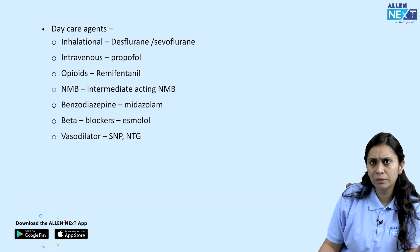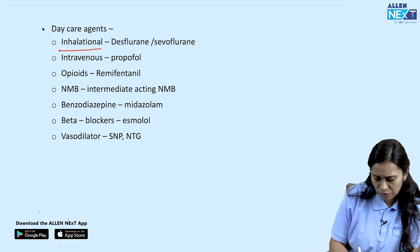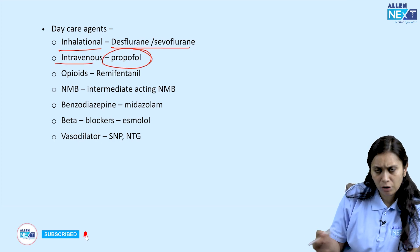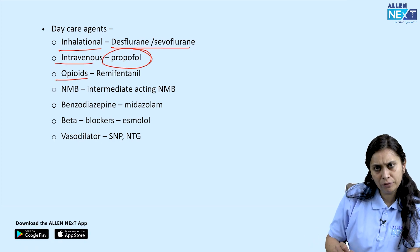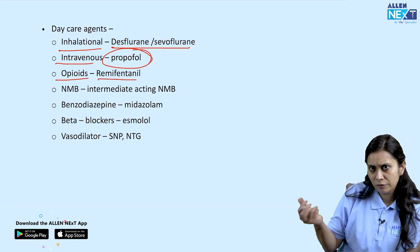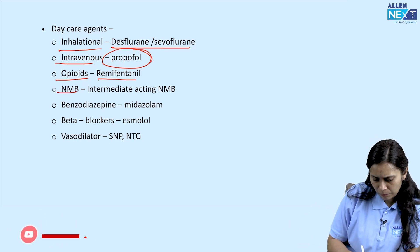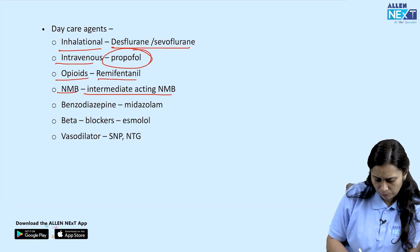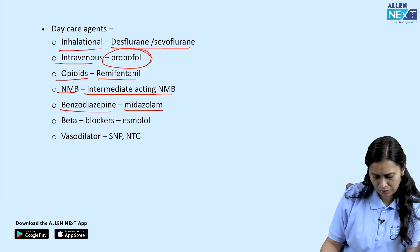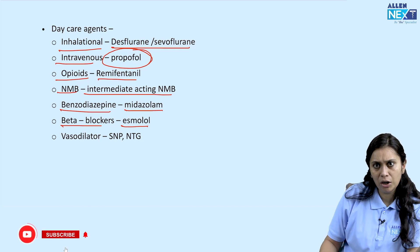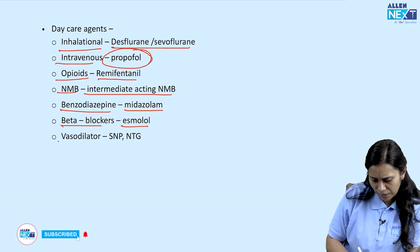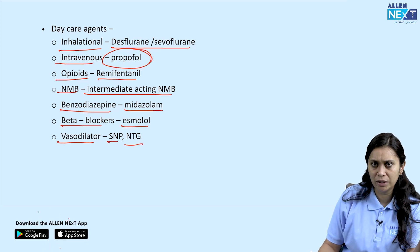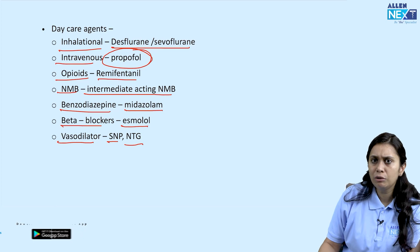A quick summary of daycare surgery drugs: among inhalation agents, desflurane and sevoflurane are best. In IV agents, propofol is the overall best. The best opioid for daycare is remifentanil — fast onset, fast offset. For neuromuscular blockers, intermediate-acting ones are used; long-acting are avoided. For benzodiazepines, midazolam is best. In beta blockers, esmolol; for vasodilators, nitroprusside and nitroglycerin — all short-acting.